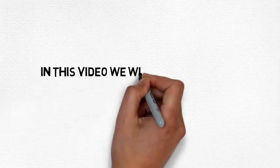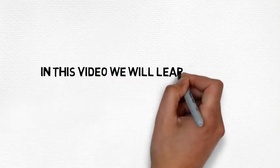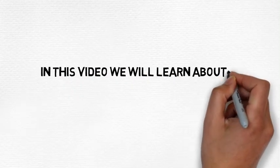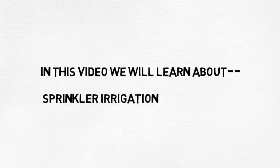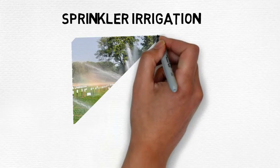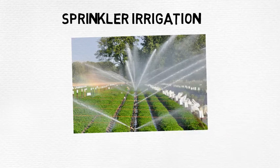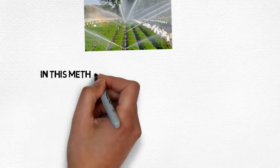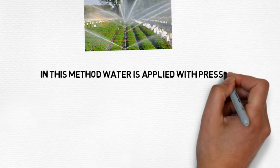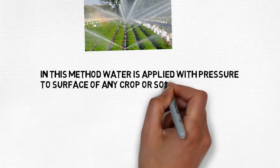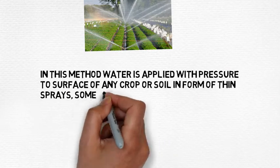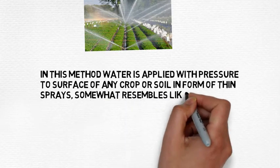Hello friends. Today in this video we will learn about sprinkler irrigation. As we all know, in sprinkler irrigation water is applied with pressure to the surface of any crop or soil in the form of a thin spray, somewhat resembling rainfall.